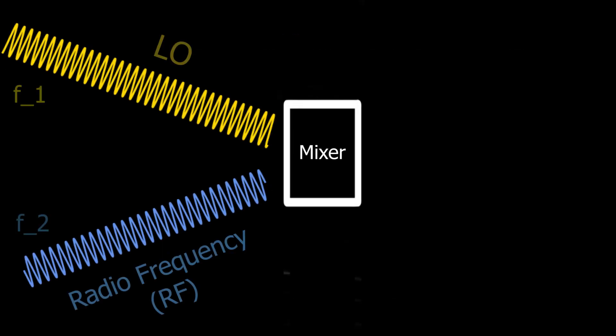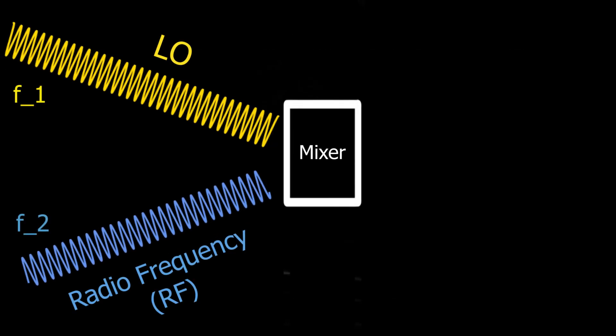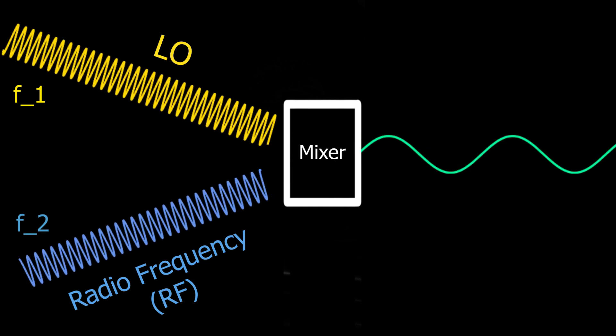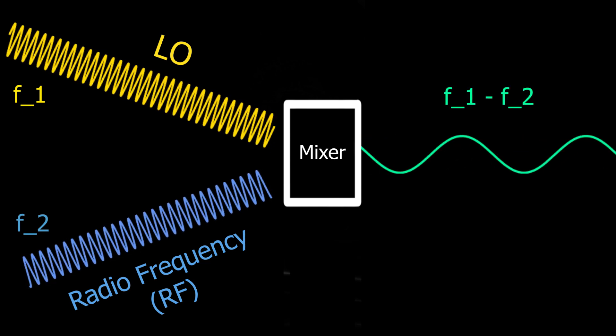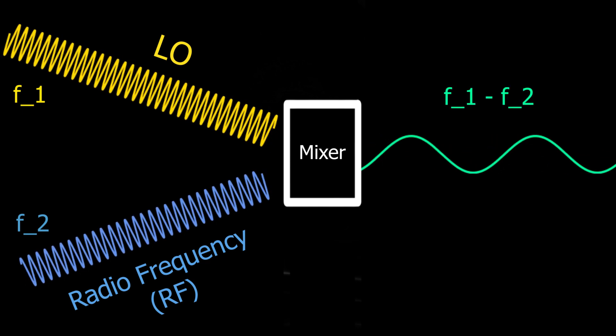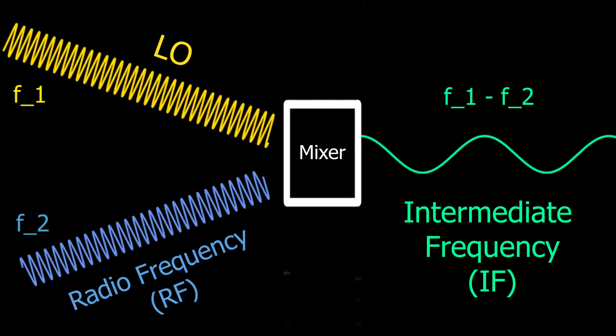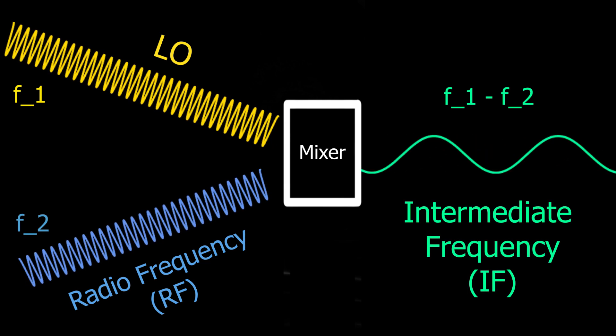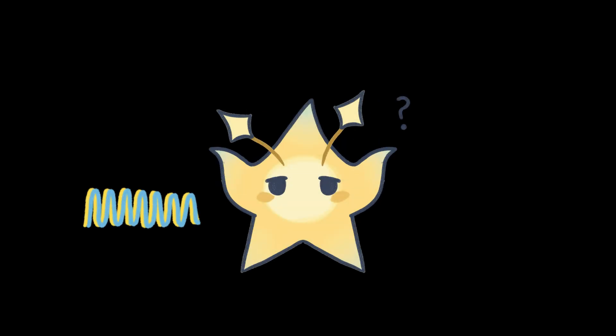By blending those two signals in the mixer, we produce an output signal at the difference between those two frequencies, called the intermediate frequency, or IF. But how does combining two high frequency signals produce a lower frequency signal?